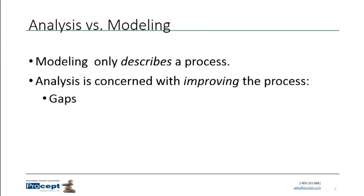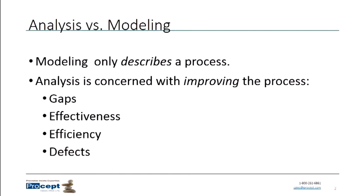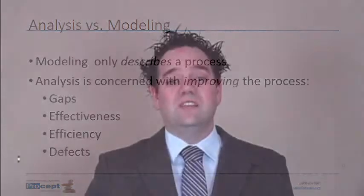We're actually trying to analyze and ultimately improve that process. That improvement could involve eliminating some gaps, or improving the effectiveness of the process — how well is the process meeting its goals or objectives? Or the efficiency of the process: how quickly is it meeting those goals, and with how many resources? And then finally, defects — how often is the process successful? Do we produce things that the customer doesn't accept, or that we have to rework, scrap, or redo? These are very important measures for the analysis of the process.